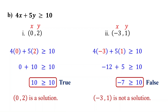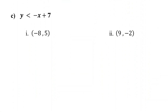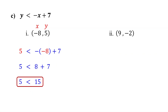Now it's your turn. Pause the video and check whether each ordered pair is a solution to the inequality. For the ordered pair (−8, 5), substitute negative 8 for x and 5 for y. Simplifying this, we find that 5 is less than 15, which is true. So the ordered pair (−8, 5) is a solution to the inequality.